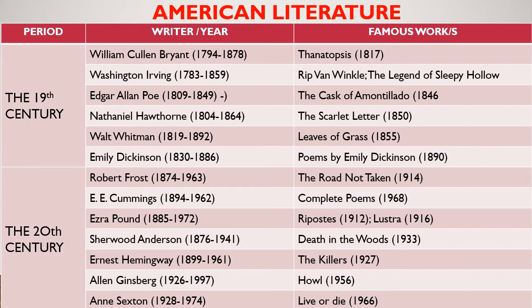Sherwood Anderson wrote prose in everyday speech. He was an American novelist and short story writer known for subjective and self-revealing works. Next is Ernest Miller Hemingway, known for his succinct, straightforward, and objective writing style. He was an American novelist, short story writer, journalist, and sportsman. His economical and understated style, which he termed the Iceberg Theory, had a strong influence on 20th century fiction.